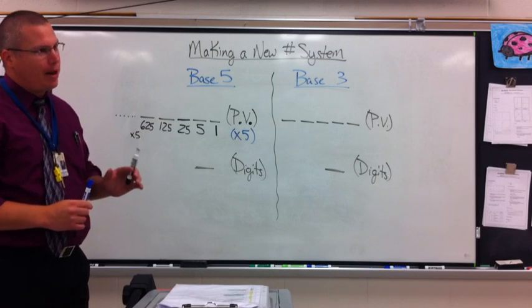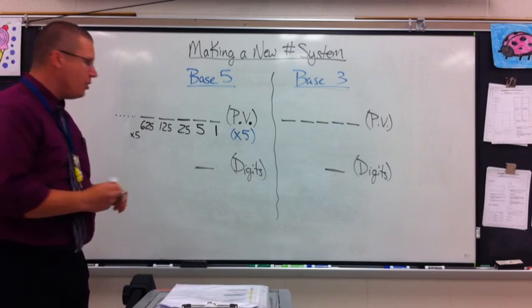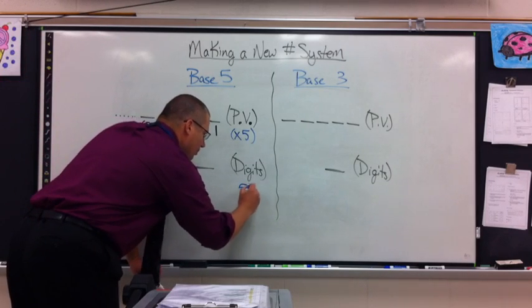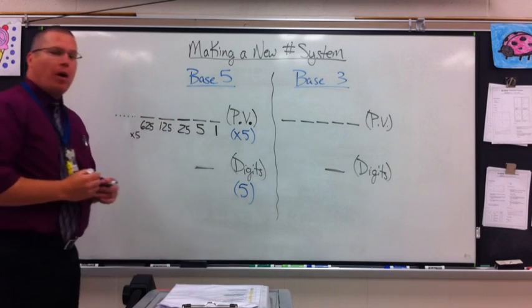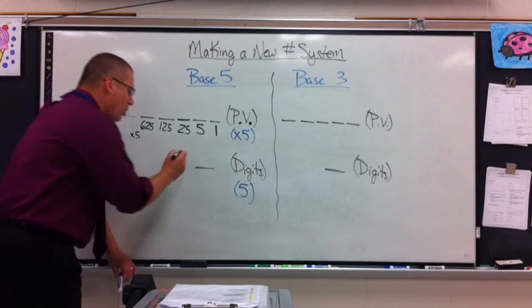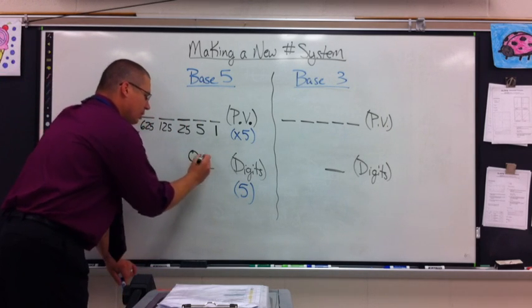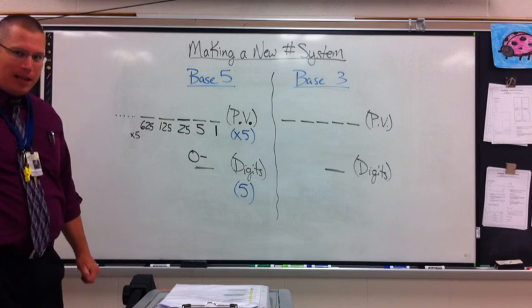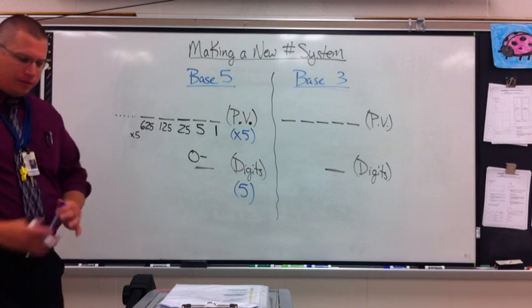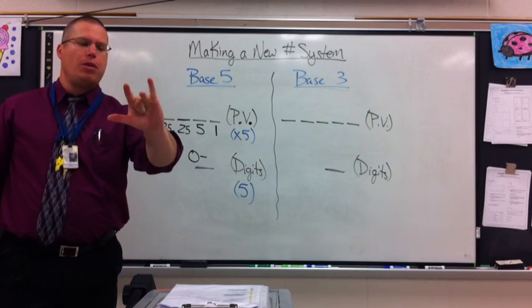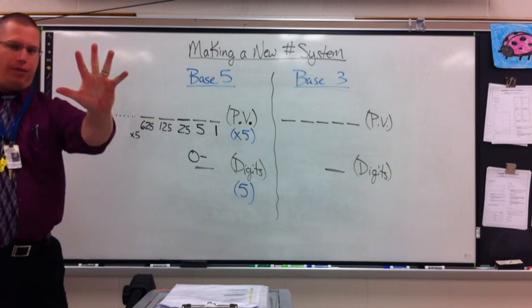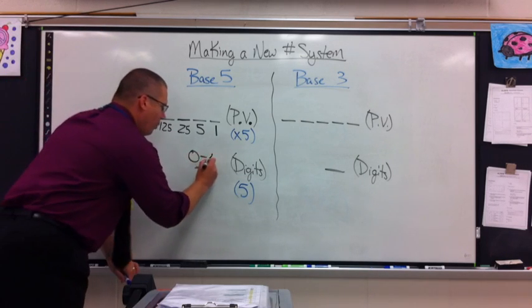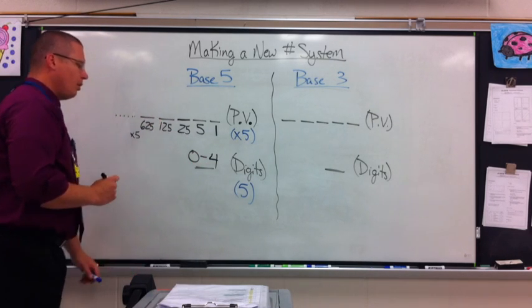What digits am I... Let me back up. How many digits am I allowed to use? I'm allowed to choose from 5. What are they? 0 has to be my lowest. What's the highest digit I'm allowed to use? 0, 1, 2, 3, 4. 5 total, 0 through 4.